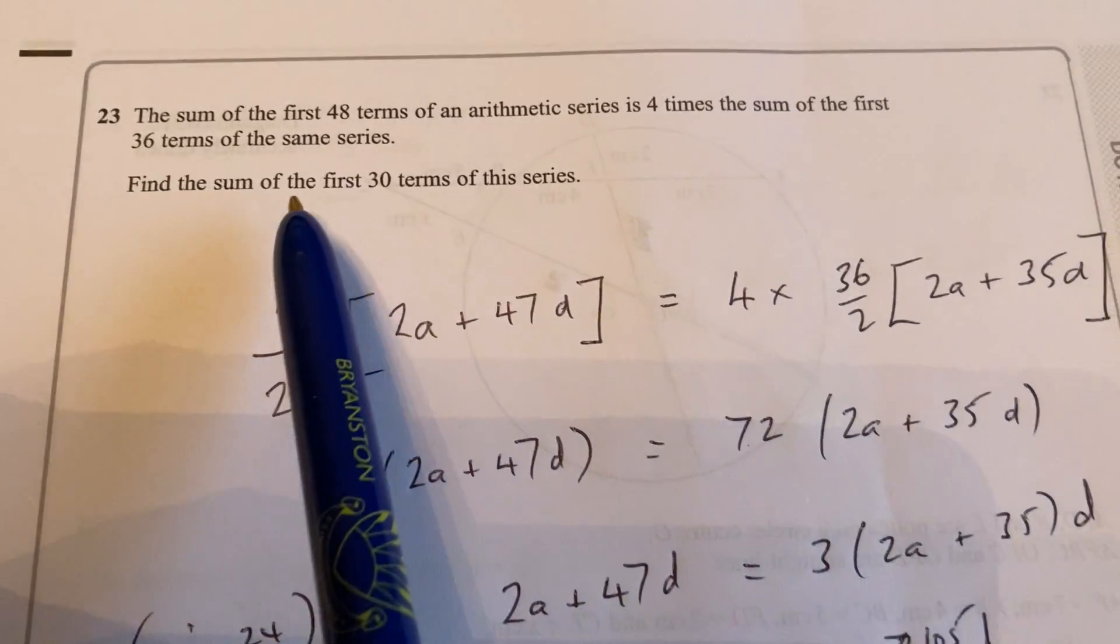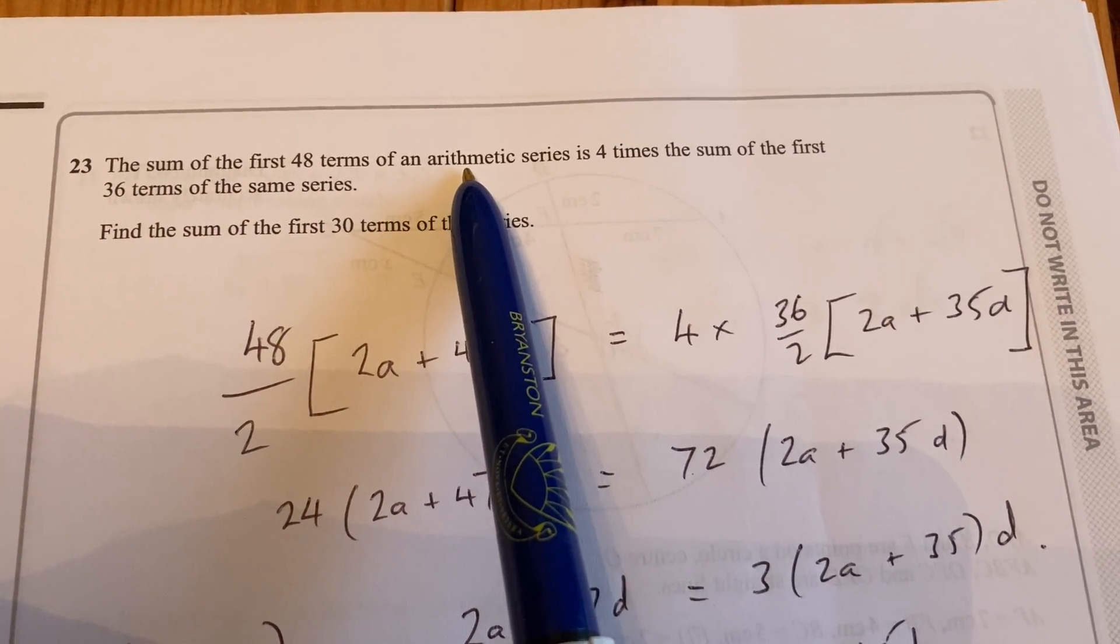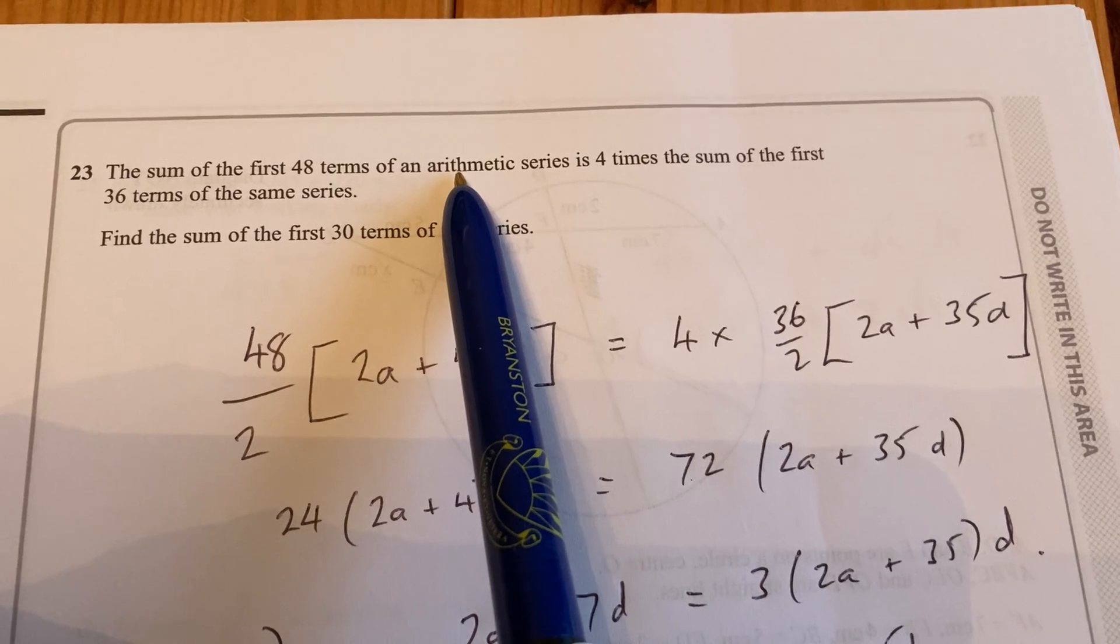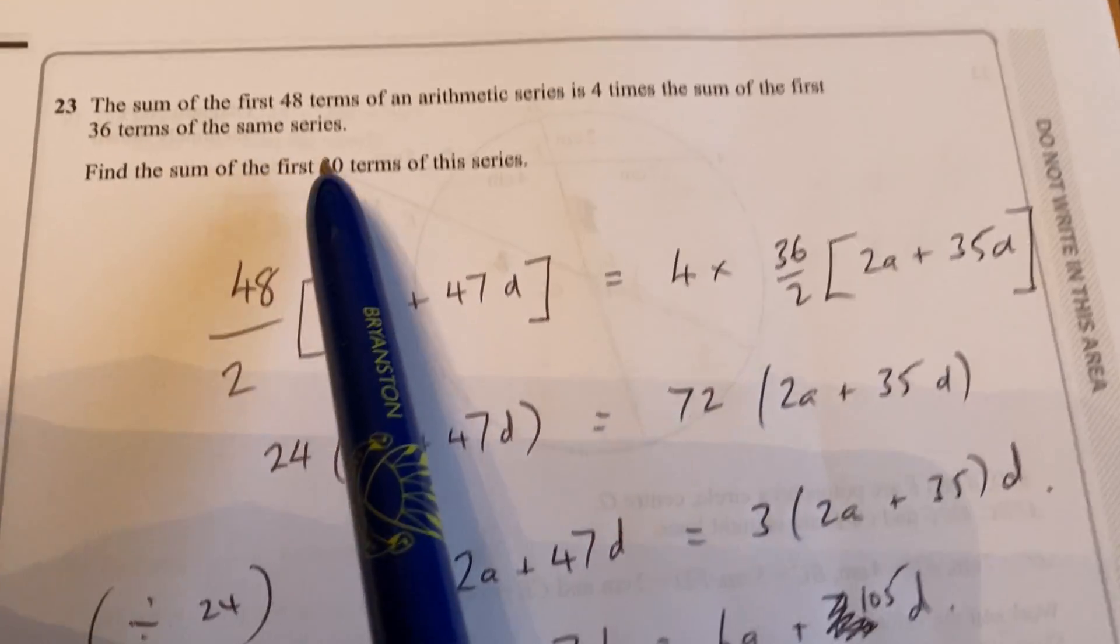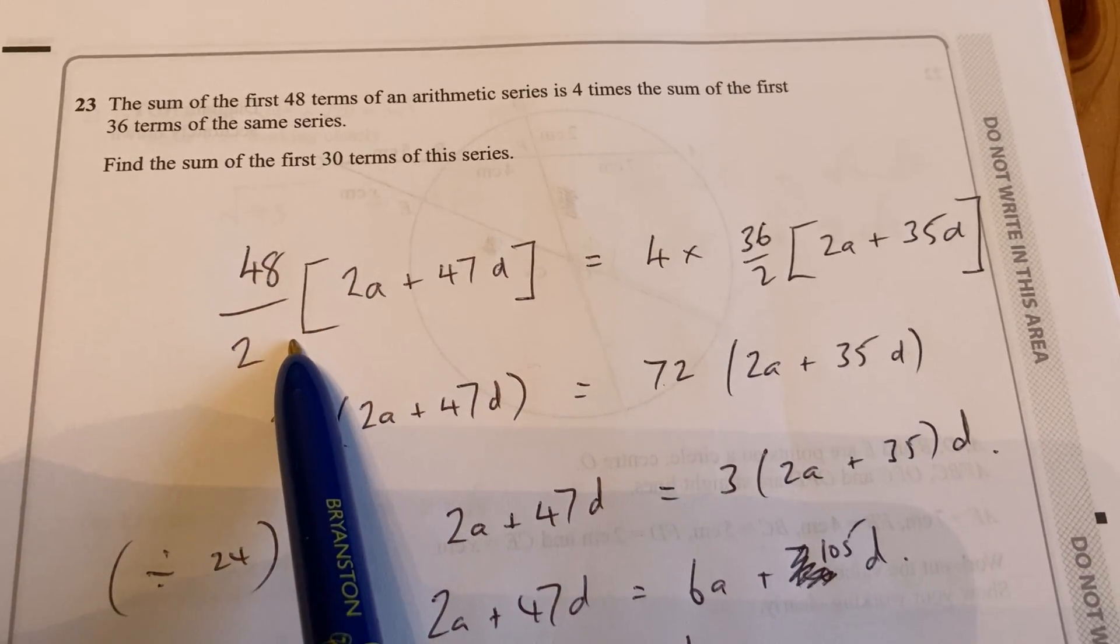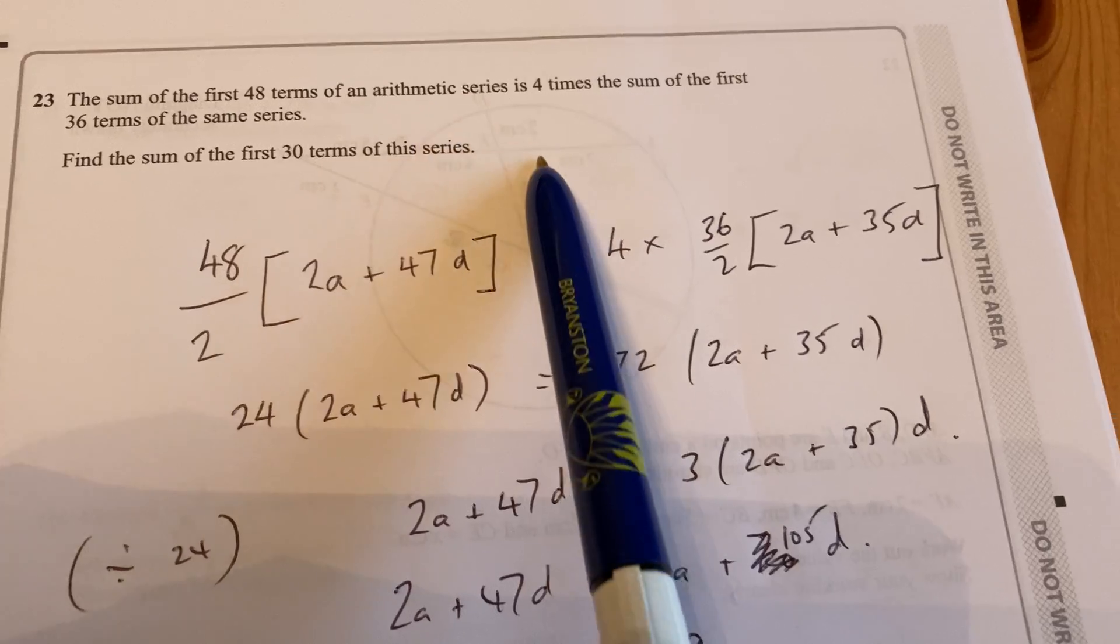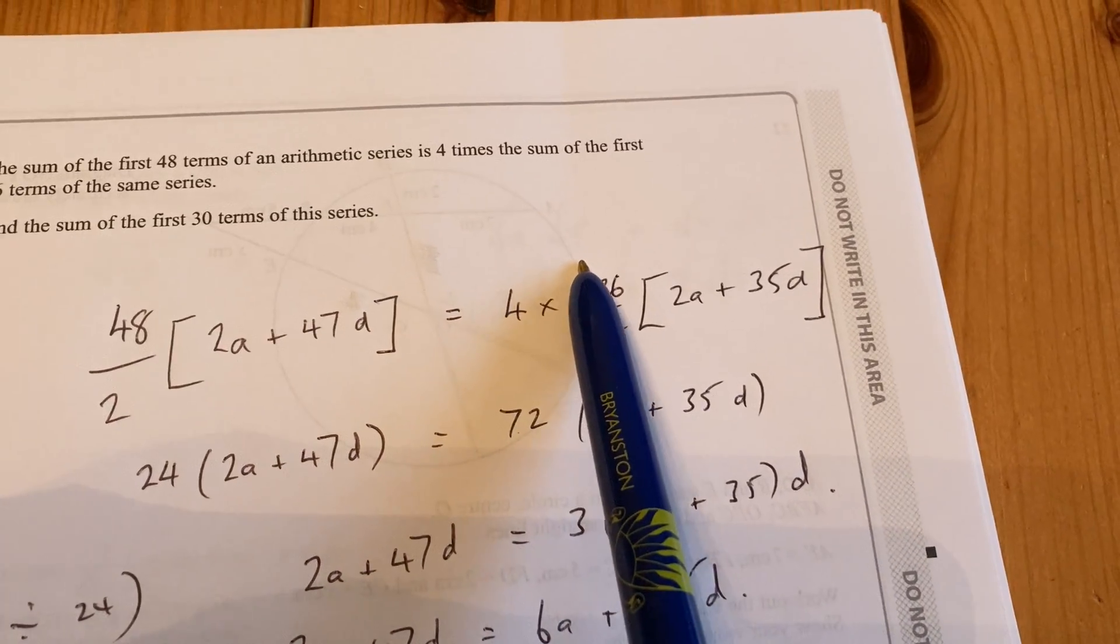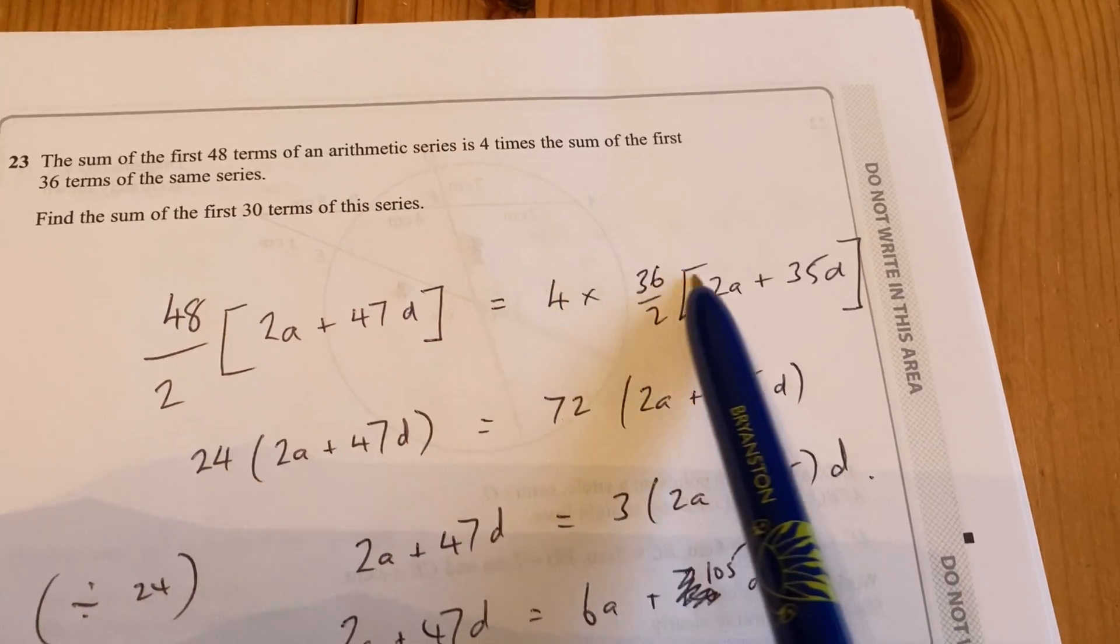Okay, I'm not given the first number or the difference, so I'm going to keep a's and d's in my formula. But for the first one, the n number is 48. So using the formula, 48 over 2 is 2a plus 47d.